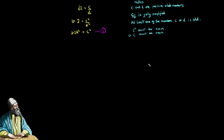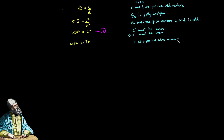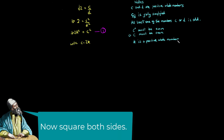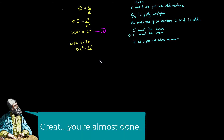Right, I think I know what to do now. I am going to acknowledge that C is even by writing C equals 2K. Hooray!